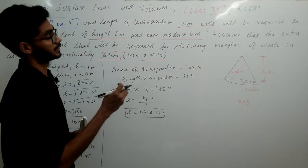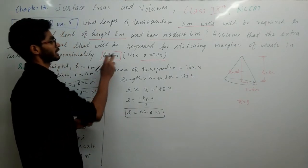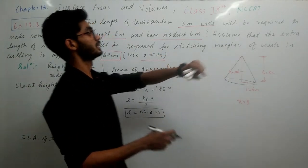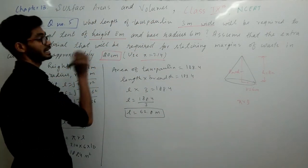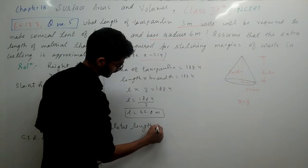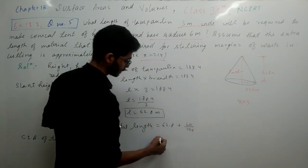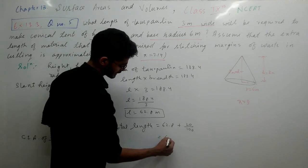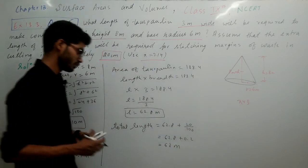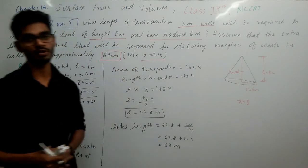Now we need to find the total length. They said extra length for stitching margins is 20 centimeter. So to find total length, we add 62.8 plus 0.2, which equals 63 meter. So the tarpaulin length will be 63 meter. I hope it's clear. Please pause the video to note it down.